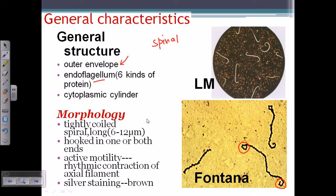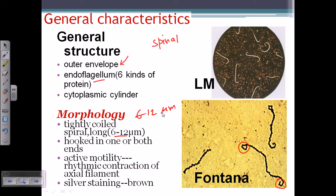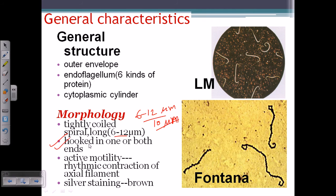They are tightly coiled spiral rods, 6 to 12 micrometers long — and can even reach 15 micrometers. Compare this to Treponema, which has a maximum of about 10 micrometers. They are hooked at one or both ends, which is their unique characteristic, and they are actively motile.